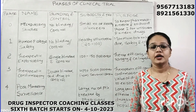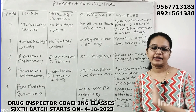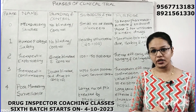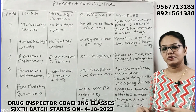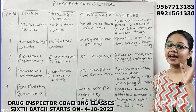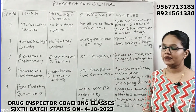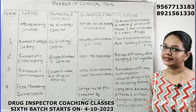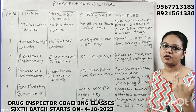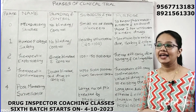In Phase 1, we have approximately 20 to 200 healthy volunteers. The main aim is safety — how safe the drug is and what is the maximum tolerable dose the patient can tolerate. This is human pharmacology and safety study, and the key focus is to find the maximum tolerable dose.